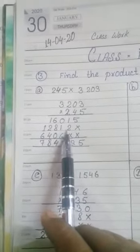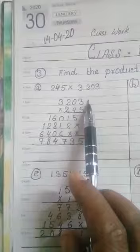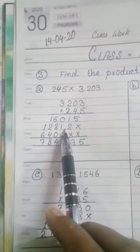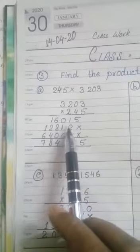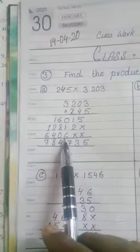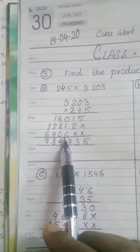4 × 3 = 12, we'll write 12. Then 4 × 2 = 8, we'll write it. Then 4 × 3 = 12. Next comes the cross.